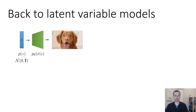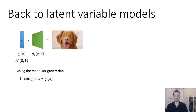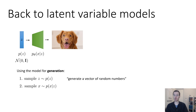The idea is that a model of this sort can capture a distribution over images — like all possible dogs — by treating z as a random number denoting which particular dog you want. Using a model like this for generation simply entails sampling z from your known p of z distribution, basically generating a bunch of random numbers, and then sampling your image according to your neural net p of x given z, or if you have a deterministic transformation, just applying that deterministic neural net to z to turn that vector of random numbers into an image.